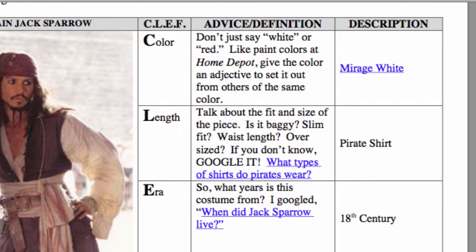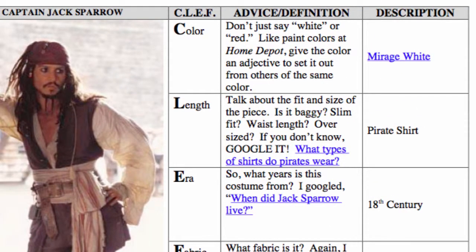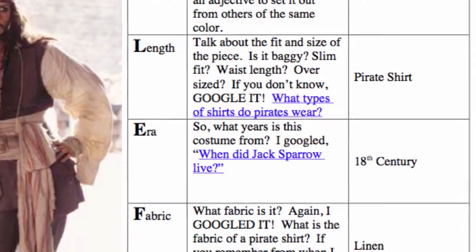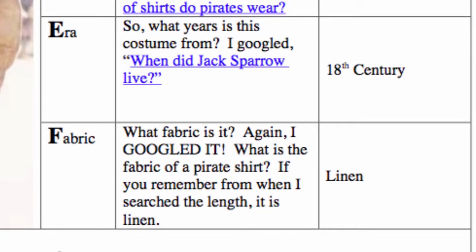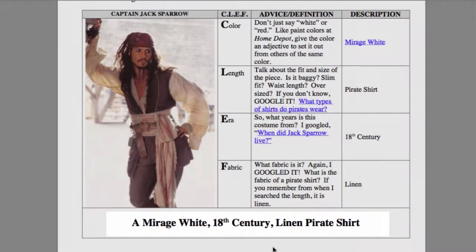So far we have a Mirage White pirate shirt. Next we want to do the era — with era we mean the years the costume is from. For this particular Johnny Depp picture, I Googled when did Jack Sparrow live. Turned out that the Pirates of the Caribbean movies took place in the 18th century. So we now know it's a Mirage White pirate shirt from the 18th century. And finally, we want to do the type of fabric it's made of. So what fabric is a pirate shirt? Again, I Googled it — what is the fabric of a pirate shirt? It's linen. So we put this all together to make a Mirage White 18th century linen pirate shirt. That's CLEF: the color, the length, the era, and the fabric.